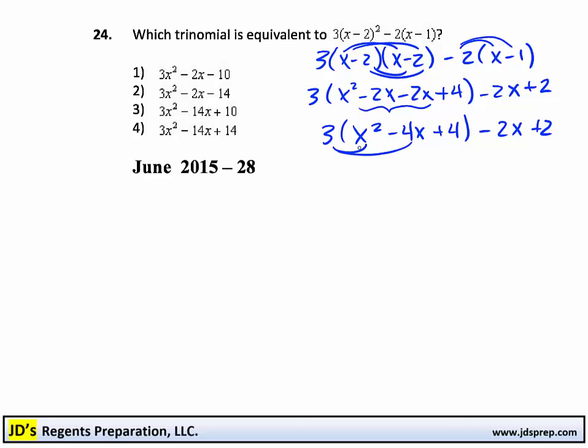We can go ahead and distribute the 3 into this trinomial, getting 3x squared minus 12x. 3 times 4 is plus 12, and then subtract 2x, and then add 2.